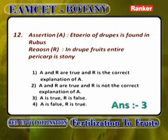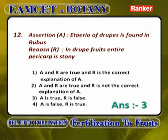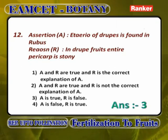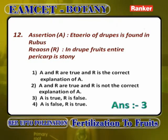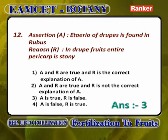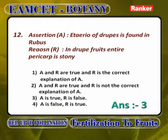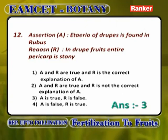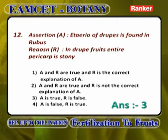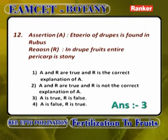Eteria of drupes is found in Rubus is correct because each fruitlet in the aggregate fruit is a drupe. In drupe fruits, entire pericarp being stony is wrong — only the endocarp is stony. So the answer is 3: A is true, R is false. Eteria of drupes in Rubus is perfectly correct, but only endocarp is stony, not the entire pericarp.